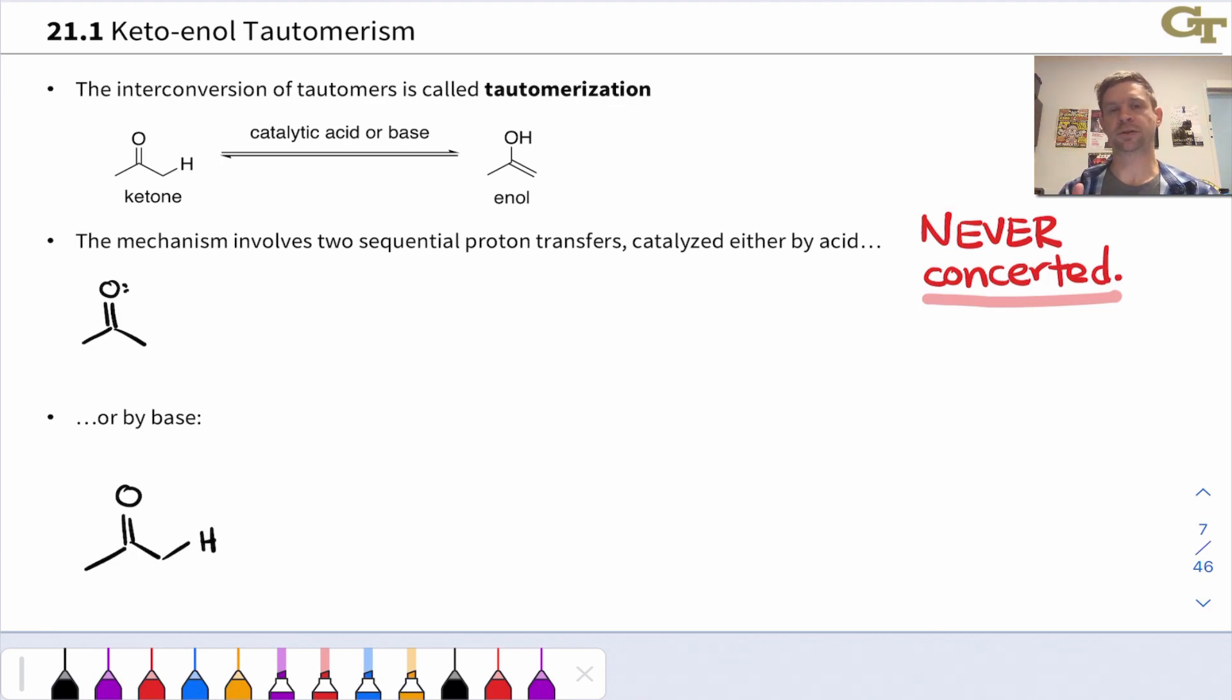Instead of that concerted one-step process, the actual mechanism of tautomerization always involves two sequential proton transfers, and the mechanism is slightly different depending on whether the reaction is catalyzed by acid or base. In the case of an acid, the first thing we're going to do is what we've done a number of times already under acid-catalyzed conditions with carbonyl compounds: we're going to protonate that carbonyl oxygen.